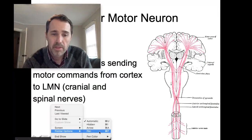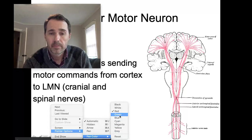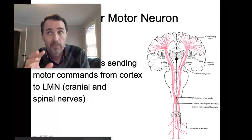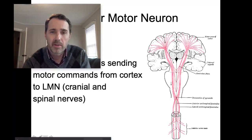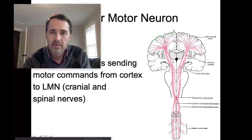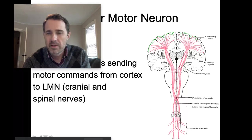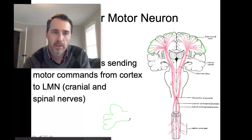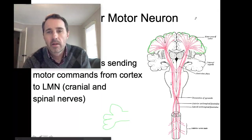We already mentioned the primary motor cortex — your motor strip — which is the posterior-most gyrus of the frontal lobe. Let's say this is a coronal slice of that. Here you have your cortex. Here in green is the part of your brain that generates and creates your motor plans, and here's my hand down here.